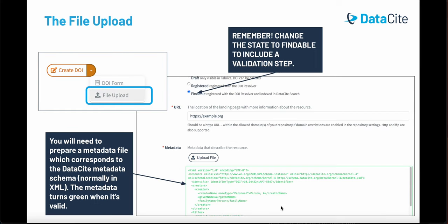If you would like to register a DOI using the file upload, click the Create DOI button and then select file upload. Remember, you need to change the state to findable to include a validation step. You'll need a pre-prepared metadata file which corresponds to Datasite's metadata schema, normally in XML format. When you enter valid metadata, the file upload window will turn green.